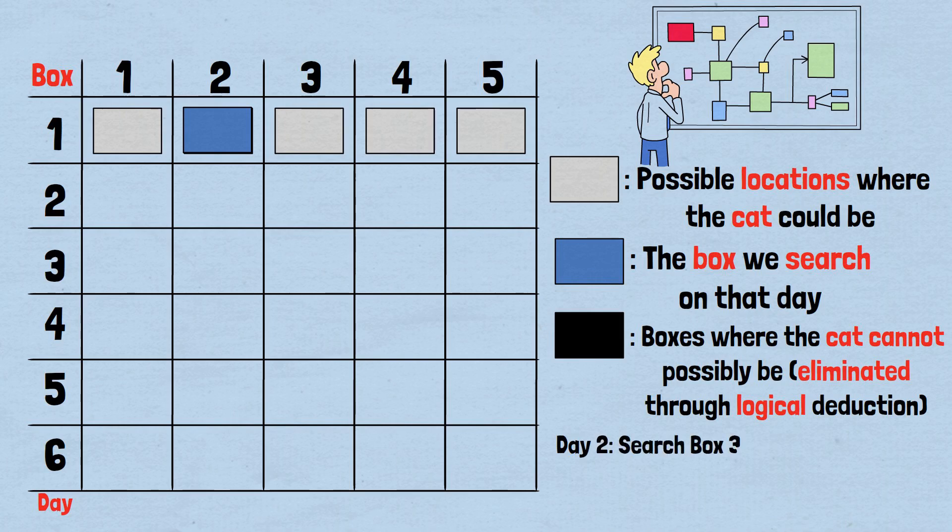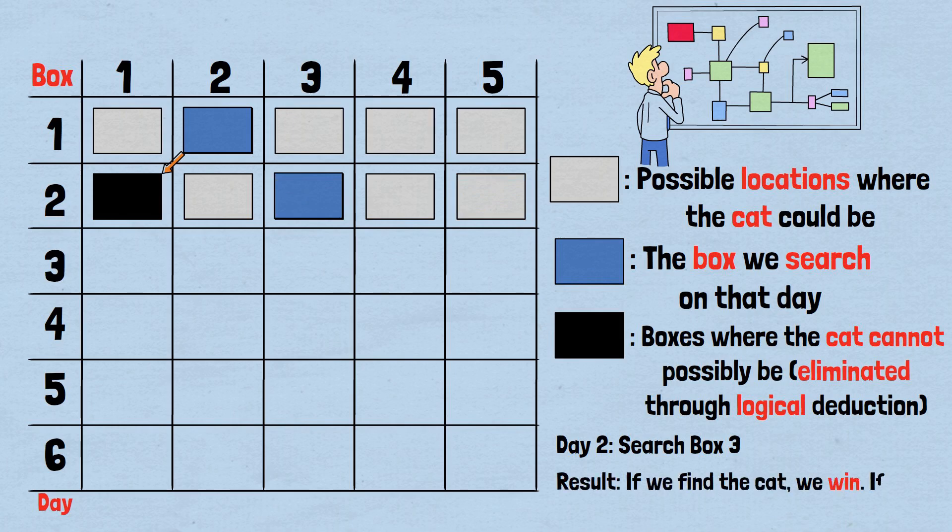Day 2: Search box 3. Key deduction: We can now eliminate box 1, mark it black. Why? If the cat was not in box 2 yesterday, there's no way it could reach box 1 today. The only path to box 1 is from box 2. Grid status: Boxes 2, 3, 4, 5 remain gray, possible locations. Our search: We check box 3, blue. Result: If we find the cat, we win. If not, we've eliminated another location.